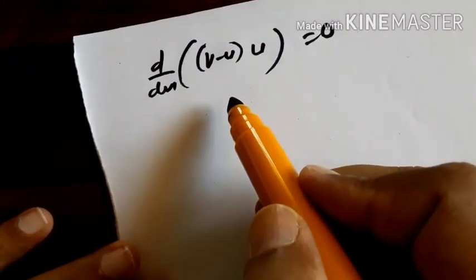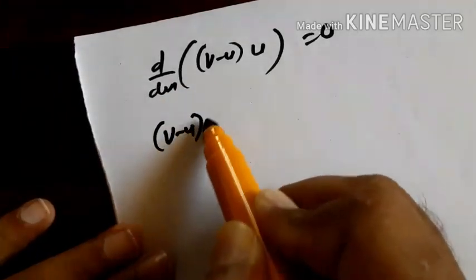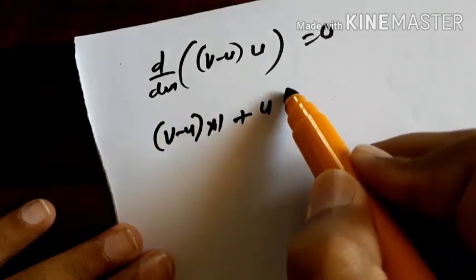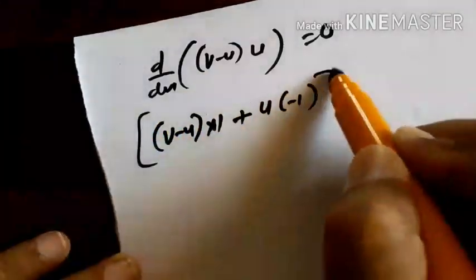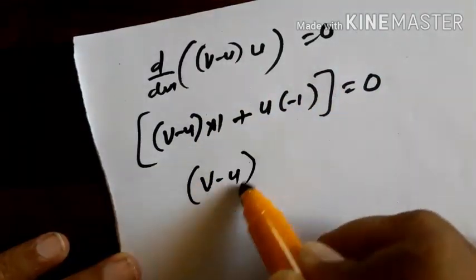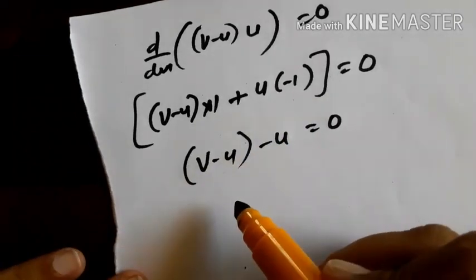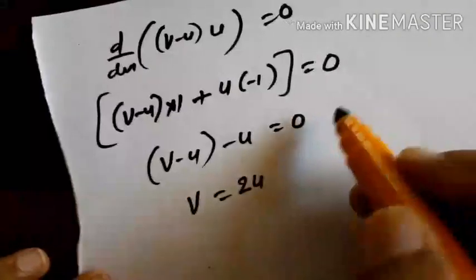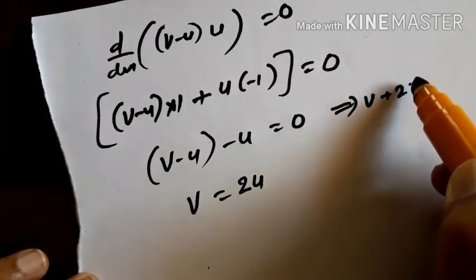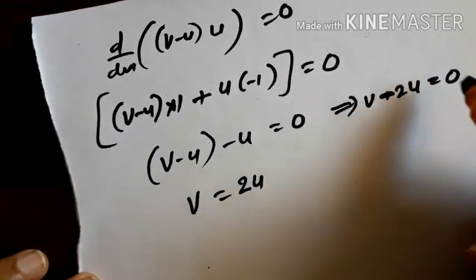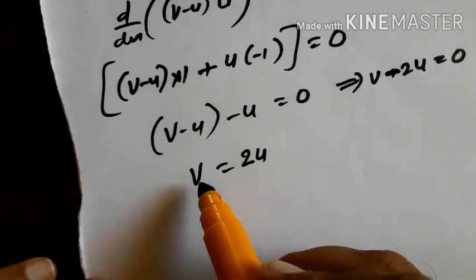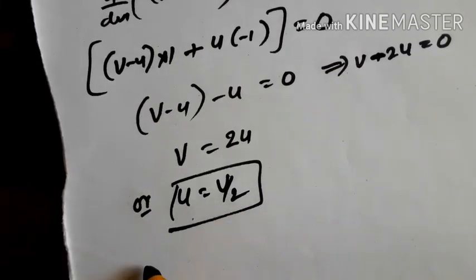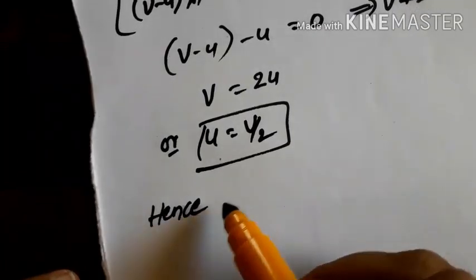Differentiating using the product rule: d/du[(V−u)u] = (V−u)(1) + u(−1) = V − u − u = V − 2u = 0. Therefore V = 2u, or u = V/2. Hence, for maximum efficiency, the peripheral speed u must be half of the jet velocity V.